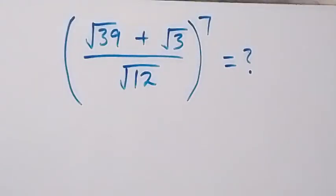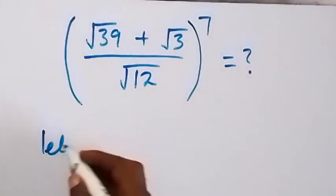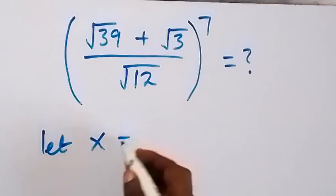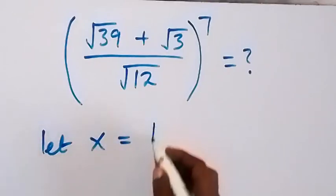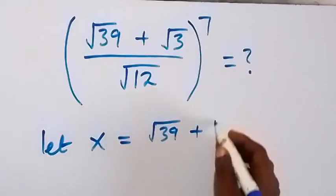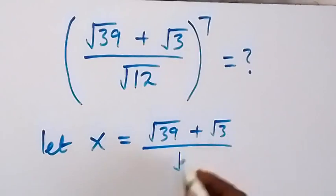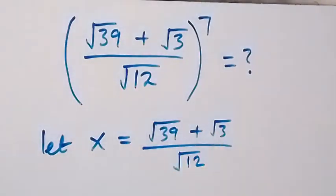Hello, you are welcome. Here is a nice math problem involving roots. Let x be equal to (√39 + √3) over √12. Then we can simplify here.